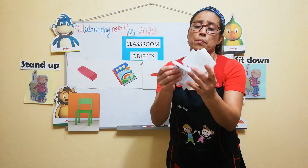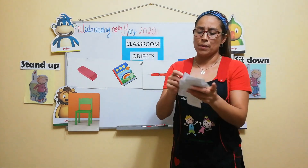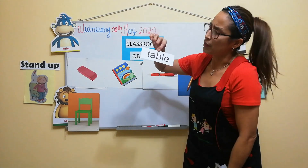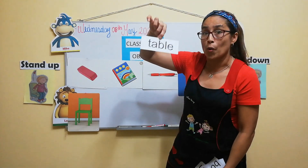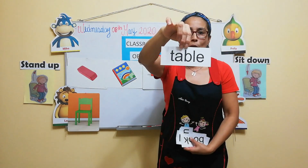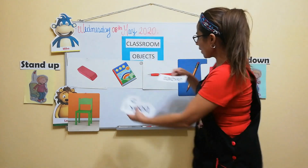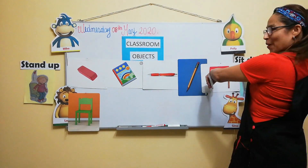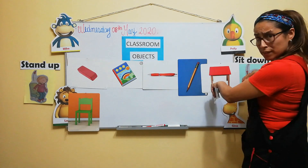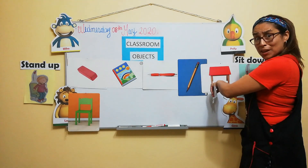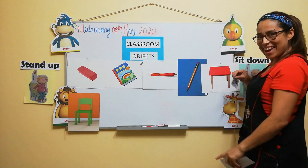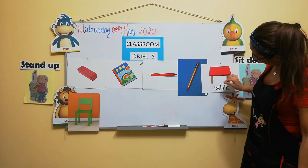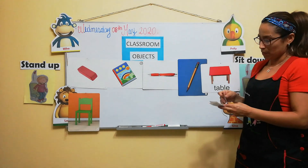I have many papers. All right. And look at this. This word is table. All right. Table. Yes. Table. What is table? Here. Table. Is this table? Is it a table? Yes. All right. Table. Table. All right. Table.